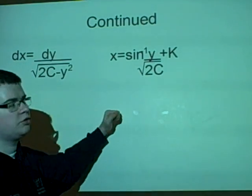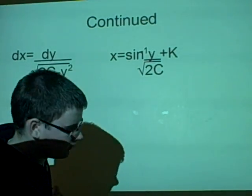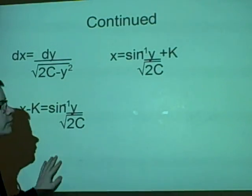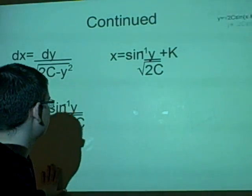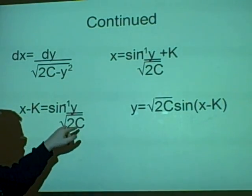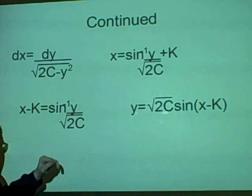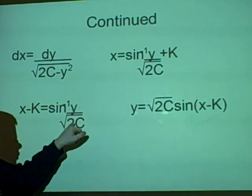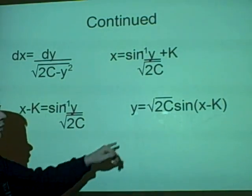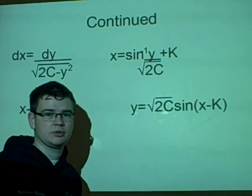Now to finish it off, we always have to leave it as y equals some function of x. So what we've done, is we've moved the k over. That's a pretty simple move really. And then we sine it all. And then we move, which will give us, if we sine it all, it will give us sine x minus k equals y over root 2C. And then we just move the 2C up, so we get y equals root 2C sine x minus k. And that's how it's done.